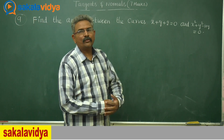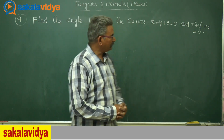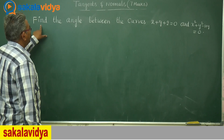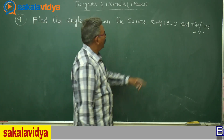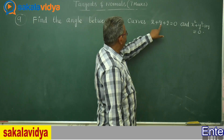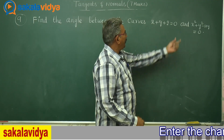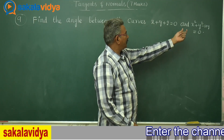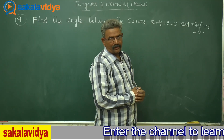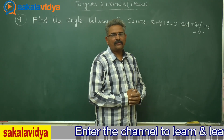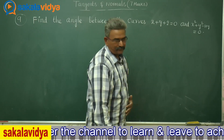Let us solve one more problem. Find the angle between the curves x plus y plus 2 is equal to 0, and x square plus y square minus 10y is equal to 0. First, let us find out the points of intersection of these two curves.